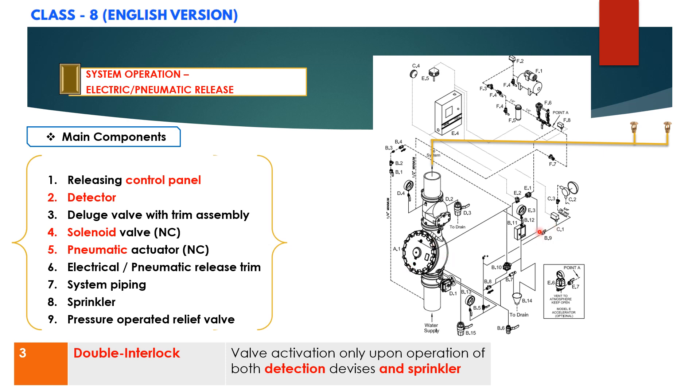then we have an emergency release B11 which can be pulled. Then the pressure is released from the priming chamber. As you can see this line, priming line is connected to the manual release. The pressure will be released through the priming line and it will flow to the drain point.